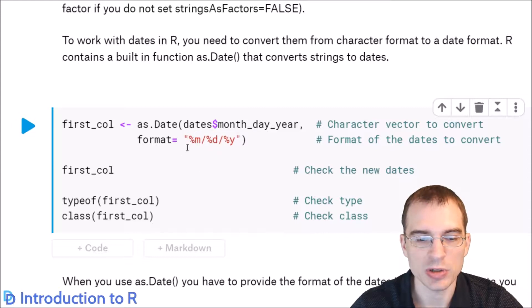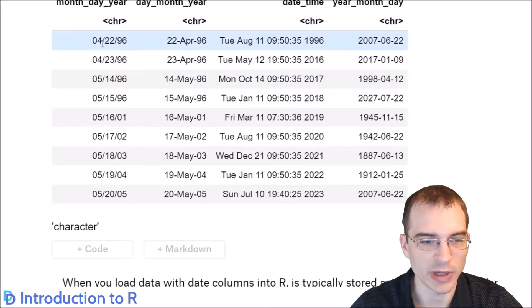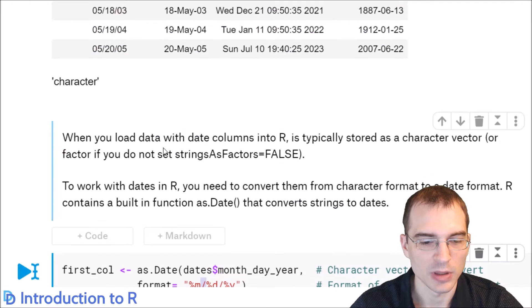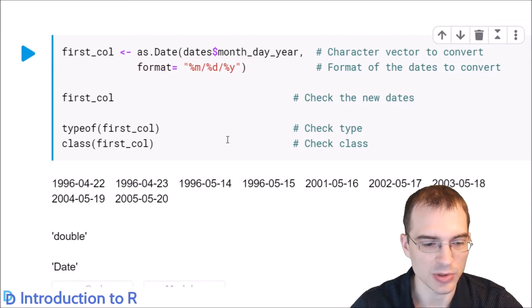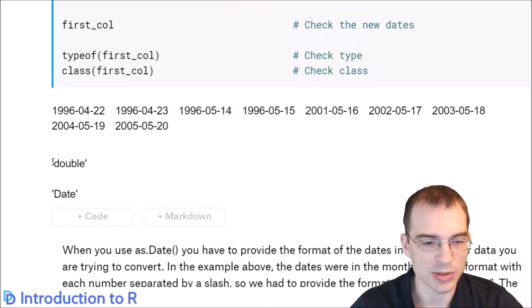We use these special characters. Percent m means the numeric month. Percent d is the day, and percent Y is the year. We include the slashes because in the format there were slashes there. If we run that, it will match this format and load this into a date time format. We'll check the type of the new column to see what it's stored as. It's stored as a numeric data type. Instead of a character, it's double, and the class is date.